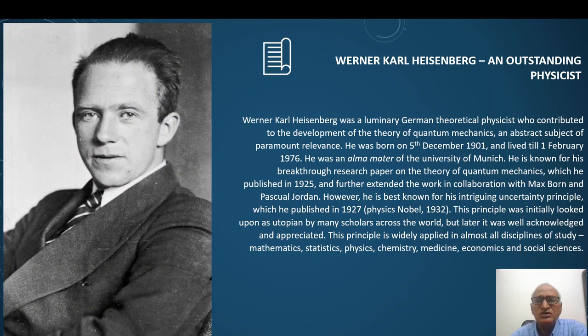However, he is best known for his intriguing uncertainty principle which he published in 1927 and earned physics Nobel Prize in 1932. This principle was initially looked upon as utopian by many scholars across the world but later it was well acknowledged and appreciated. This principle is widely applied in almost all disciplines of study: mathematics, statistics, physics, chemistry, medicine, economics and social sciences. Thus Heisenberg became immortal to his discovery.